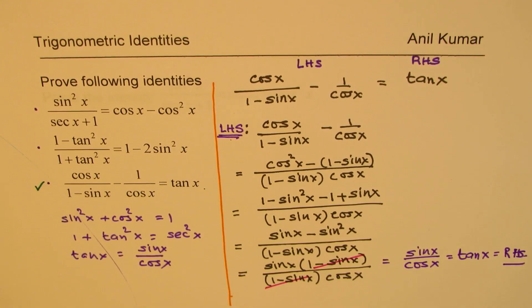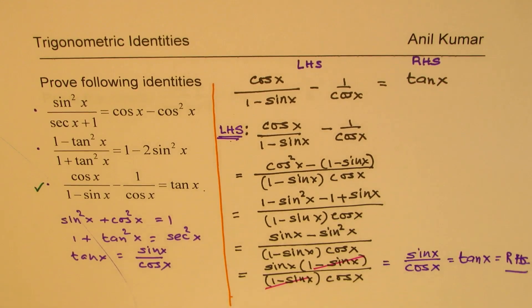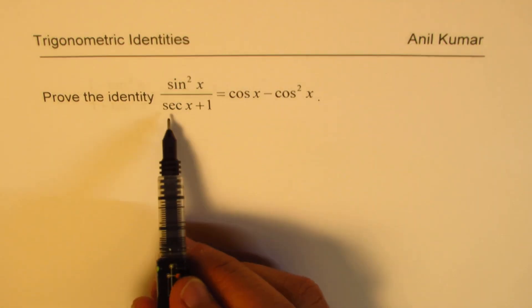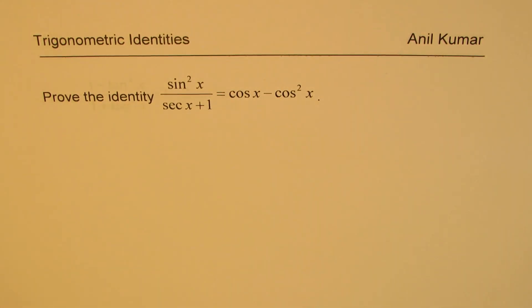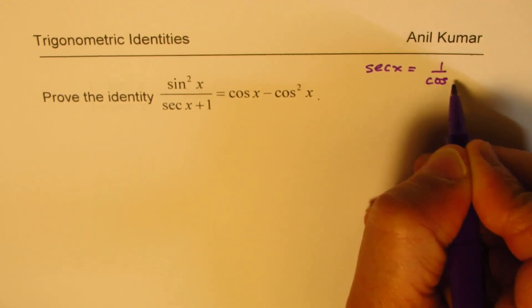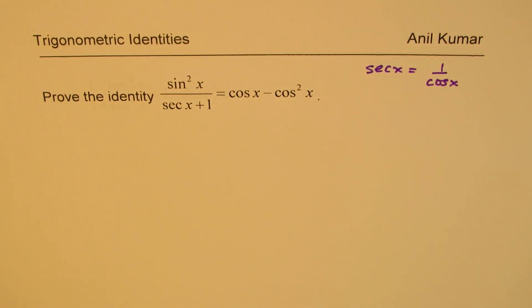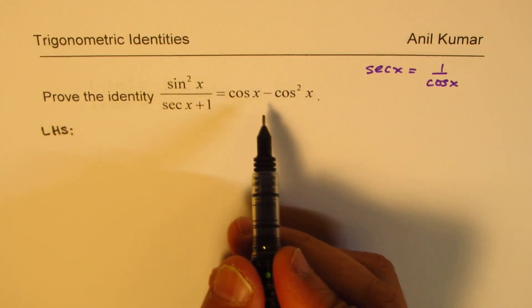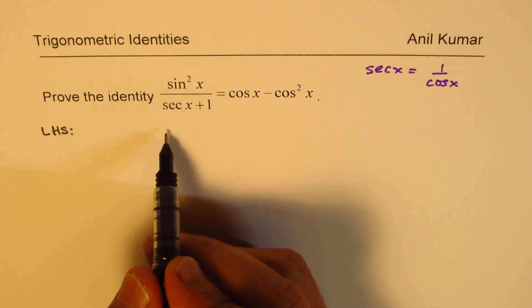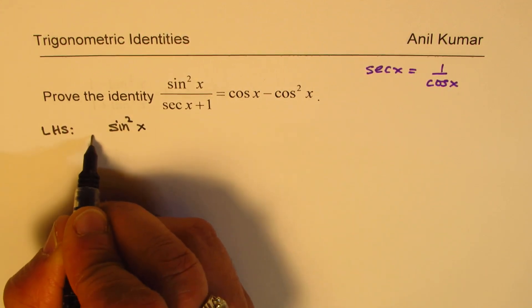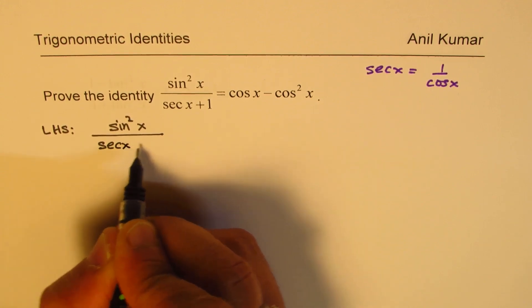I'd like you to pause the video and try the other two. Now let's look at the solution. I'll take up sine squared x over secant x plus 1. Secant x is 1 over cosine x. We'll start with the left-hand side again, since it appears more complicated and contains secant.